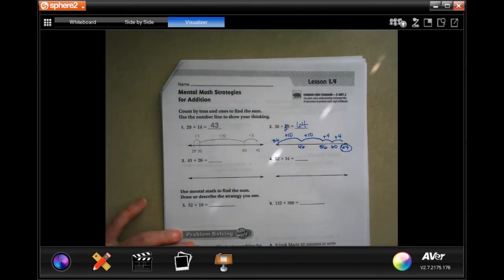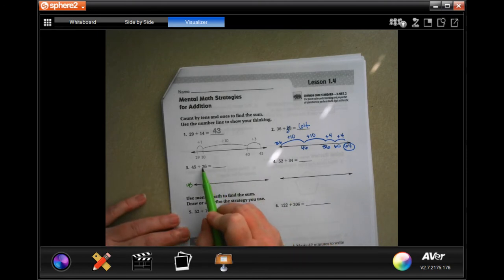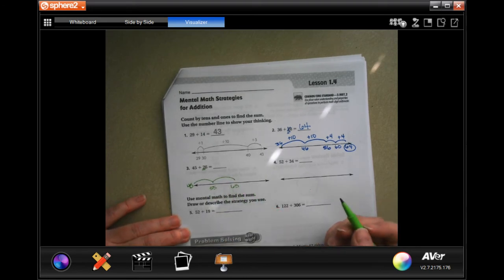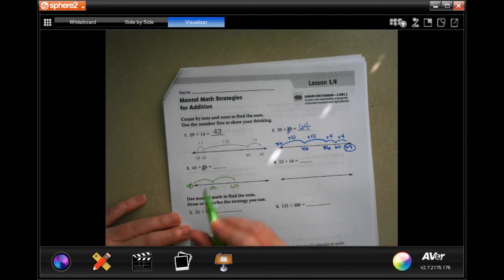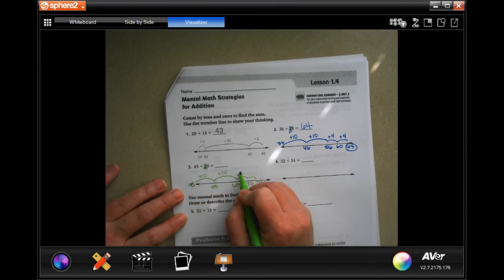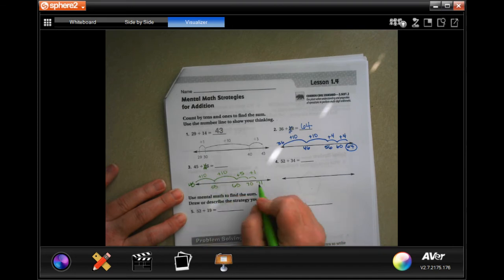We're going to go ahead and do that again, don't panic. So we're going to start at 45. We're going to go two hops of 10, so there's 55, and there's 65. So now our 20 is taken care of. Now I just need to add six. Well, doing five more will get us to 70, and then 71. So plus 10, plus 10, plus 5, plus 1. 10 plus 10 is 20, plus 5 is 25, plus 1 is 26. We added 26, got 71.